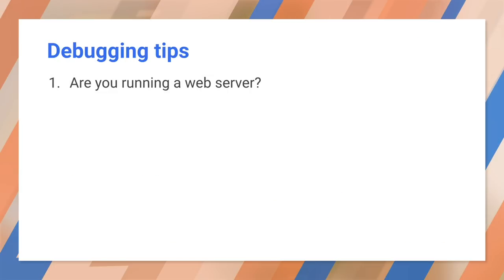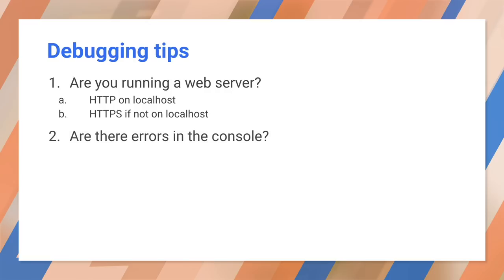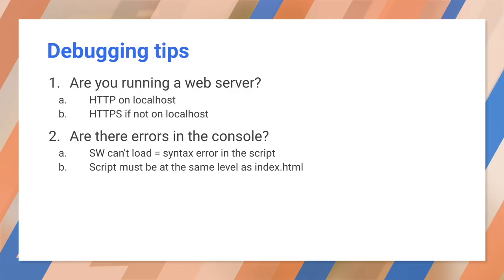If something went wrong, here are some debugging tips. First, are you running a web server? If you're on localhost, HTTP is fine, but if you're not on localhost, the service worker requires HTTPS. Second, check the browser console — if the service worker is failing to load the script, it could be a syntax error. Also check that your script is in the right place: it has to be at the top level of your site with index.html. Now you should have a website that works as a PWA. If that went by a little quickly, check out the Codelabs link — it has all the steps and a starter website. If you're ready for more, the next episode has all the details on adding your PWA to the home screen. Until then, have fun building your first PWA. We'll see you next time.